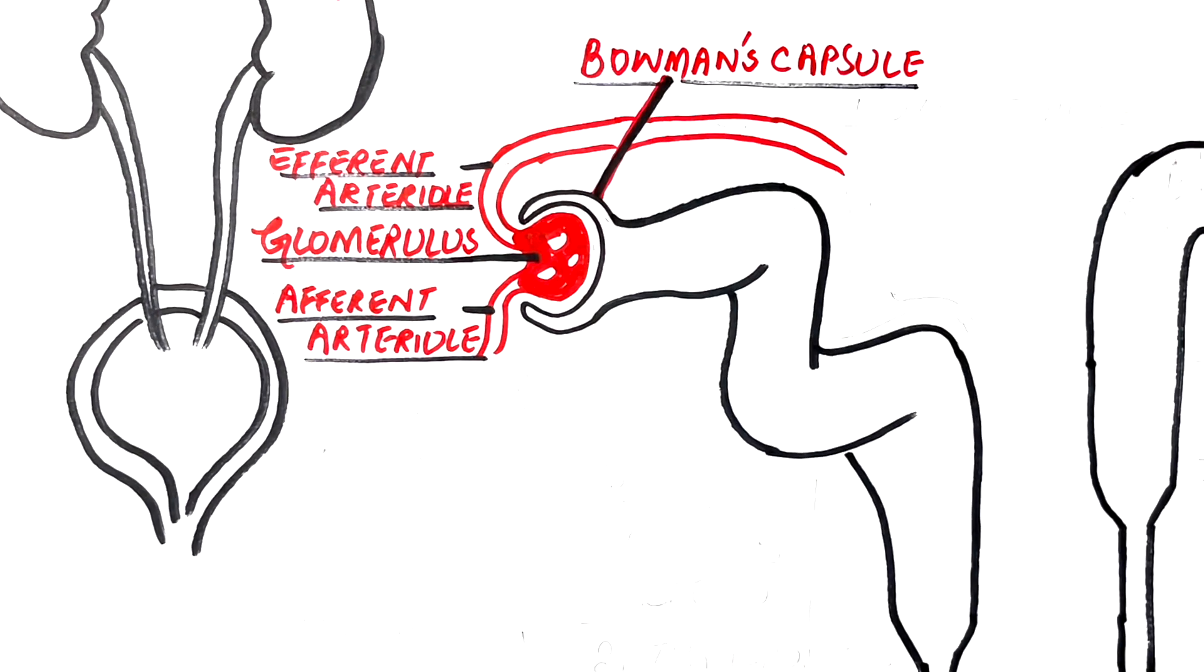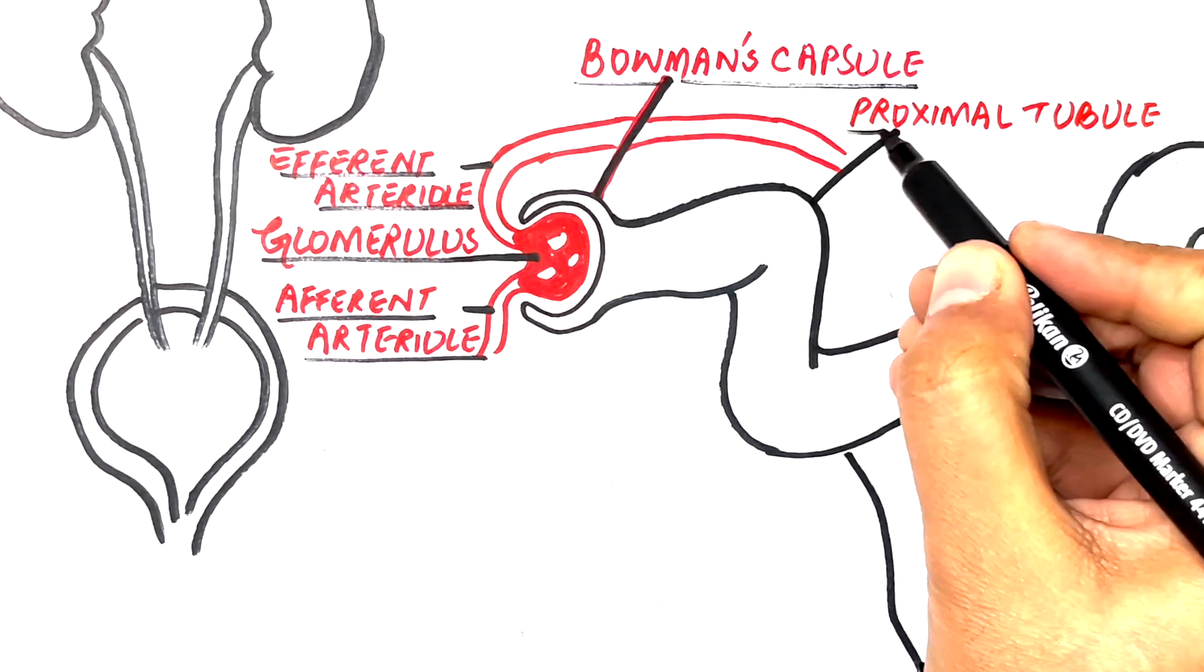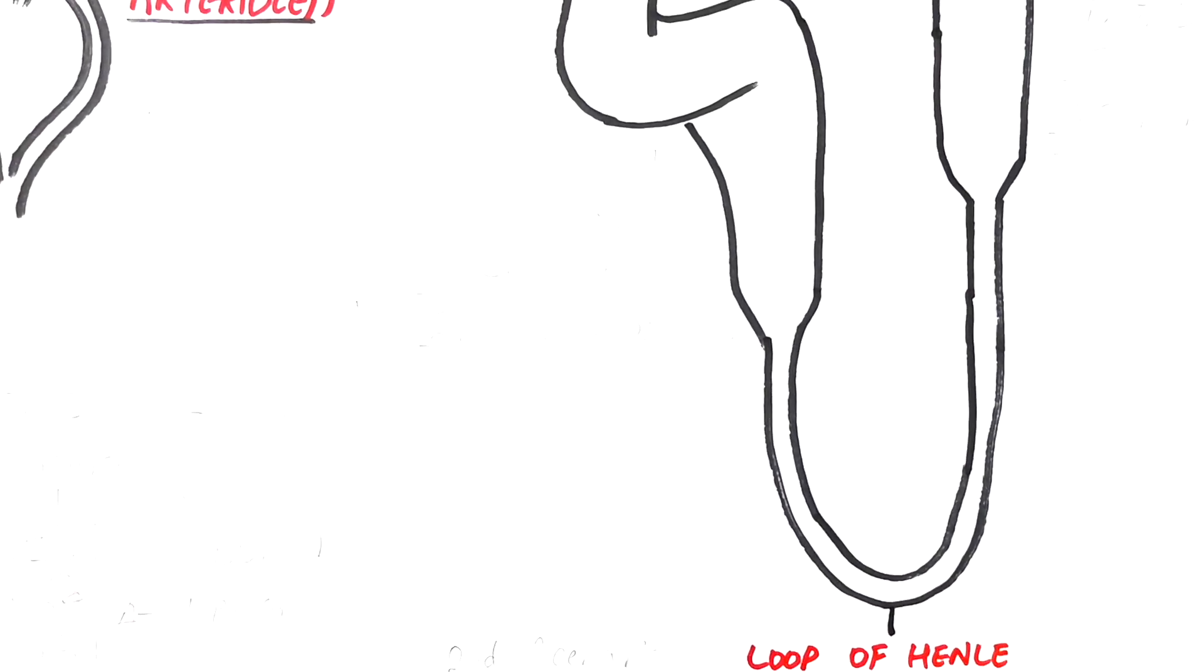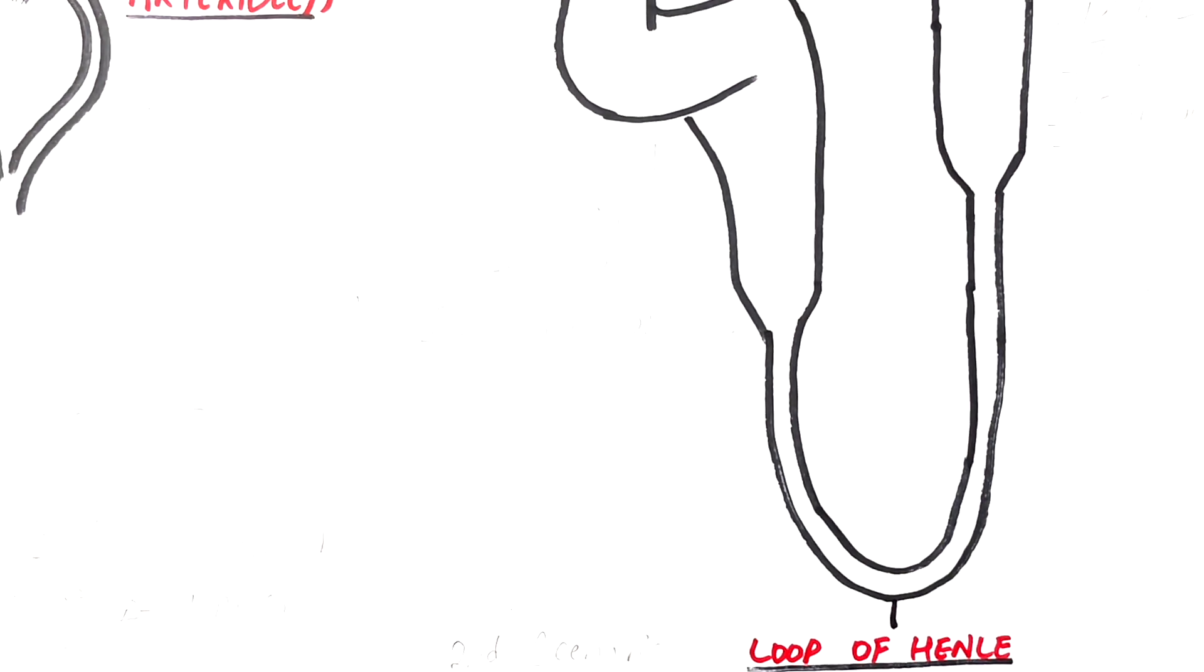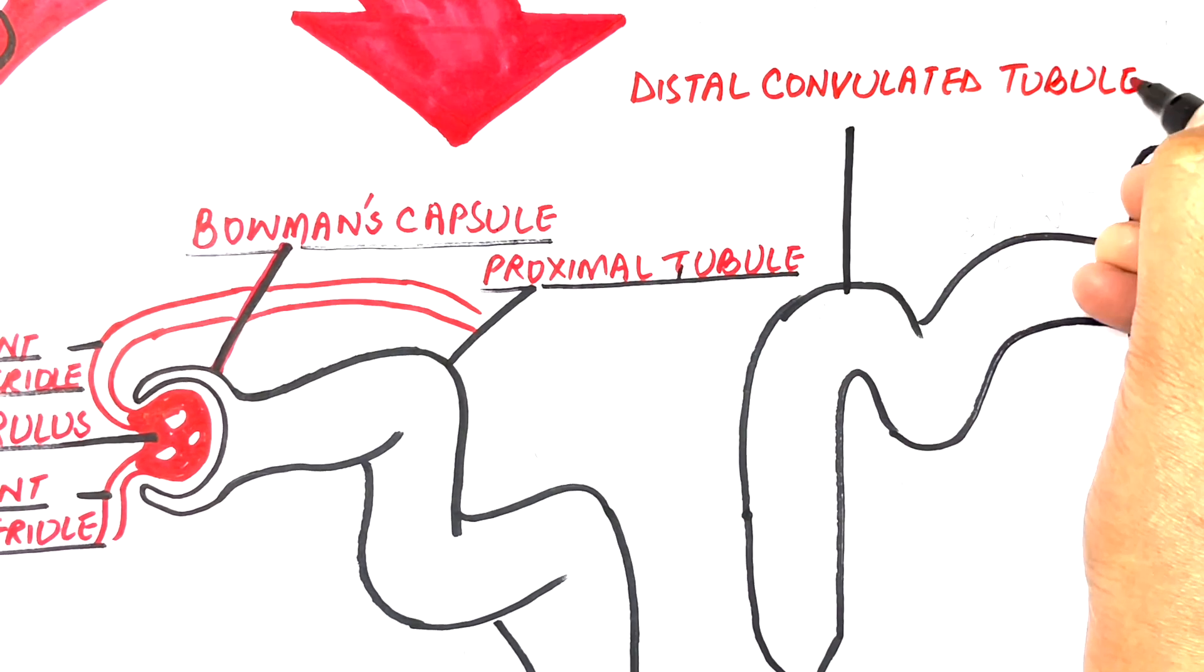Blood is filtered through the glomerulus into the Bowman's capsule and is then passed through a series of channels named the proximal tubule, the loop of Henle, which comprises of a descending and an ascending loop, and then the distal convoluted tubules, which end up into the collecting duct.